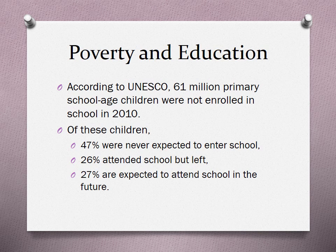That's a huge number of children who should be in school, but are not. Of these children, 47% were never expected to enter school — and you don't have to be a researcher to presume that the vast majority of those were girls.